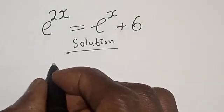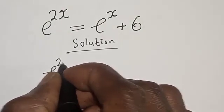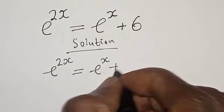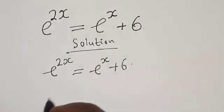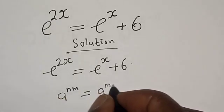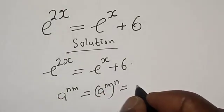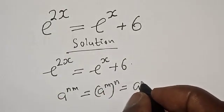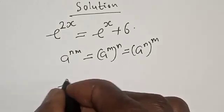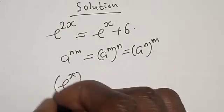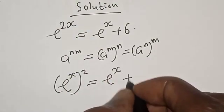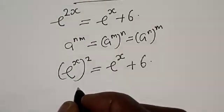We have the given equation e raised to power 2s is equal to e raised to power s plus 6. Remember, if you have a raised to power nm, it is the same as a raised to power m, raised to power n. Applying this rule, we get e raised to power s squared is equal to e raised to power s plus 6.